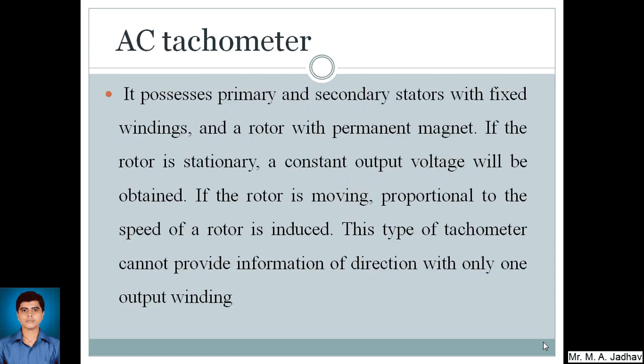So we will go through the AC tachometer now. AC tachometer possesses primary and secondary status with fixed windings and a rotor with permanent magnet. If the rotor is stationary, a constant output voltage will be obtained. If the rotor is moving, voltage proportional to the speed of the rotor is induced. This type of tachometer cannot provide information of direction with only one output winding.